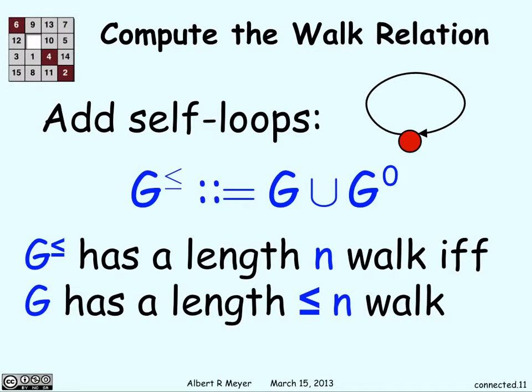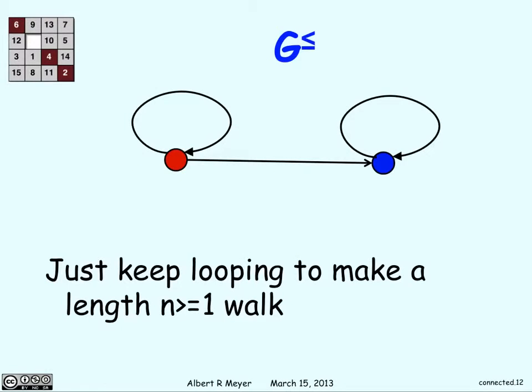Now think about that. If I can get from vertex x to vertex y in n minus 1, or n minus some amount of steps in G, then I can get there in n steps in G^≤ because I can just loop around. If I want to get here from red to blue, I can get there in one step without those self-loops. But with the self-loops, I can just keep starting from red, go around to red as many times as I want, n minus 1 times, and then do this final step. So I can make a length n walk for any value of n greater than 1.